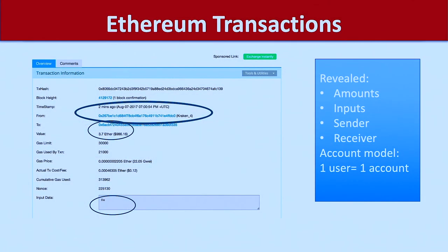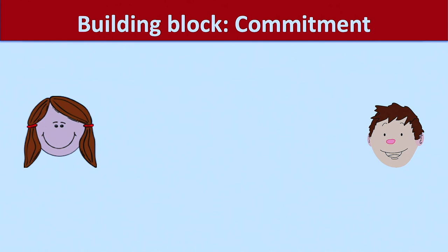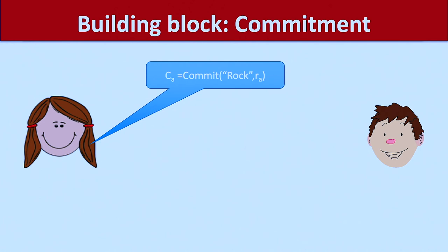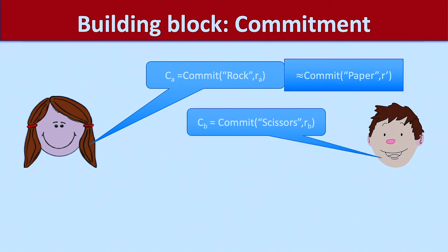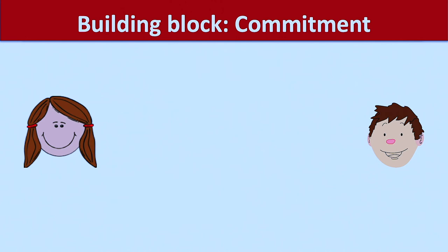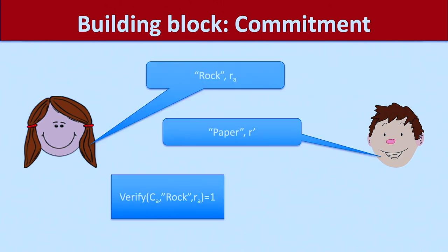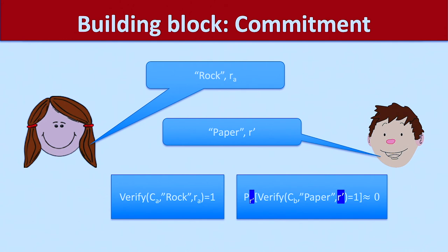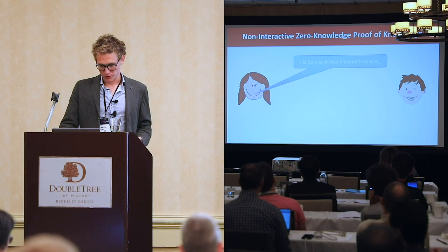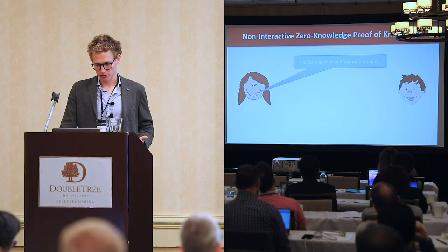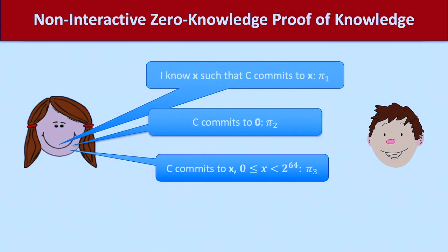So we want to do something better. I'll quickly go over the cryptographic building blocks we'll be using. One thing is a commitment, which has two properties: first, if I commit to a value you cannot distinguish it from a commitment to a different value; and second, if I commit to 'rock', I will only be able to open it to 'rock' afterwards. We're going to use homomorphic commitments, where I can add two commitments to get a commitment to the sum. The other tool is zero-knowledge proofs — one useful kind lets me prove that a commitment is in a small range.